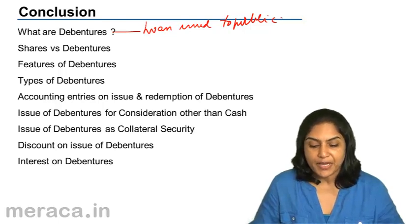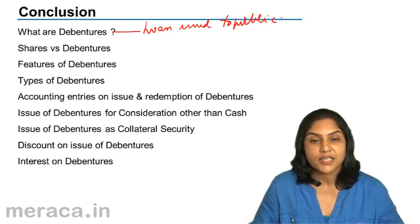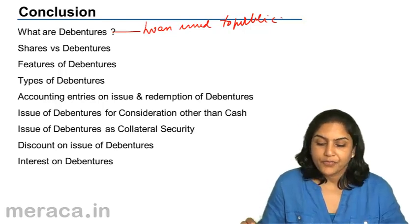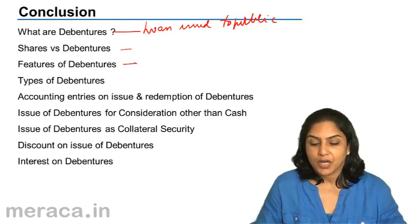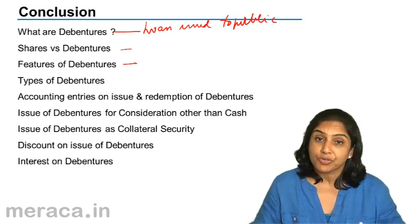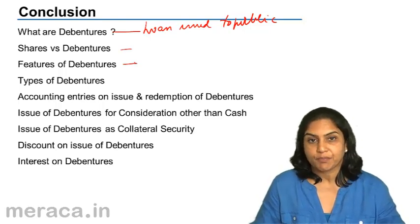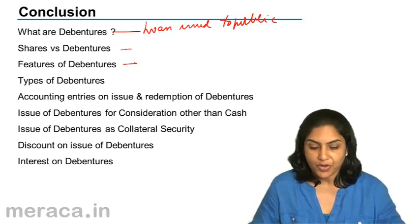The features of debentures: they carry a fixed rate of interest, interest is a charge against profits, they are redeemable, they are usually secured, they may be listed on a stock exchange, and they may be issued at par, premium, or discount. They may also be redeemed at par, premium, or discount.